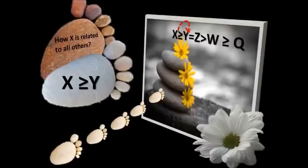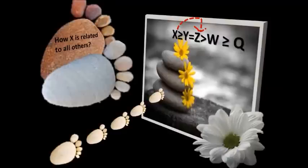Now if you take x and z, how are they related? Look at the symbols between x and z. They are: greater than or equal to, and equal to. Which takes the higher priority — greater than or equal to, or just equal to? The answer is greater than or equal to. So obviously the answer is x greater than or equal to z.